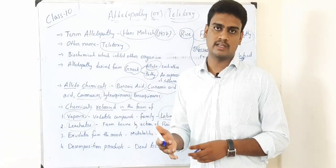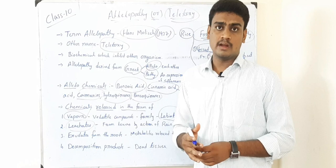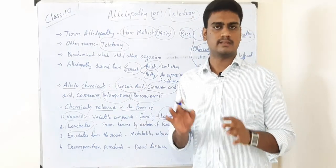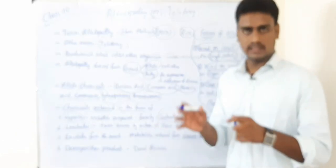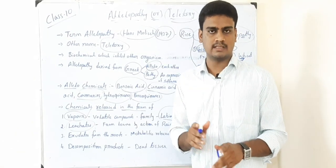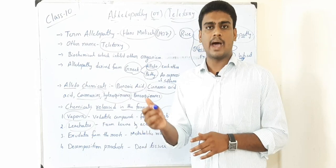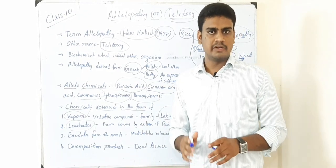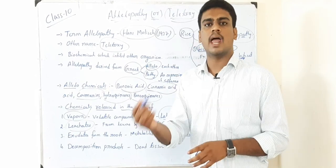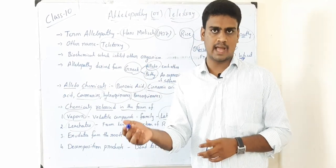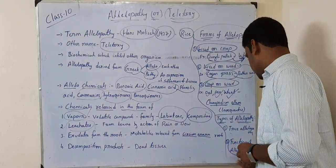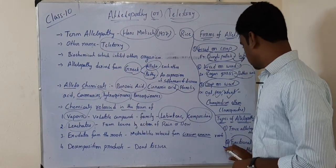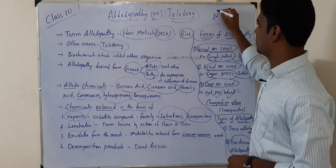In functional allelopathy, when a plant releases chemicals, those chemicals must first be transformed by microorganisms before they become effective allelochemicals. Until that transformation occurs, they will not suppress or kill any other plant. So one mediator — the microorganism — is involved in converting the chemical into an active allelochemical. That is called functional allelopathy.